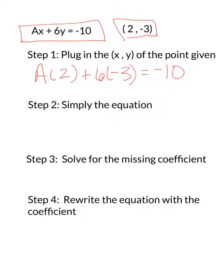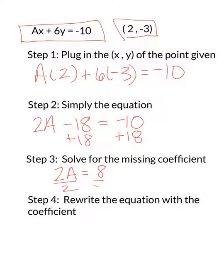And then the second step is to simplify. And now I'm going to solve. And I'm going to solve it up here. I'm just going to add 18 to both sides, which gives me 2A equals 8. So divide by 2, divide by 2, A equals 4.